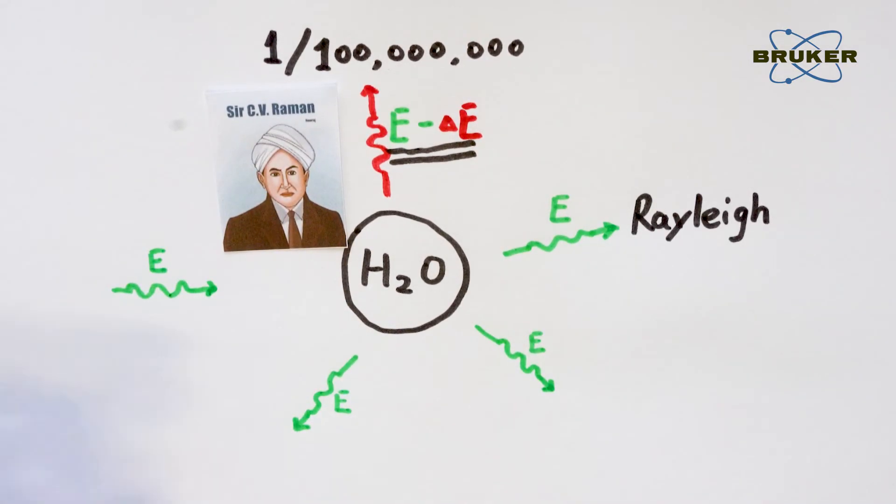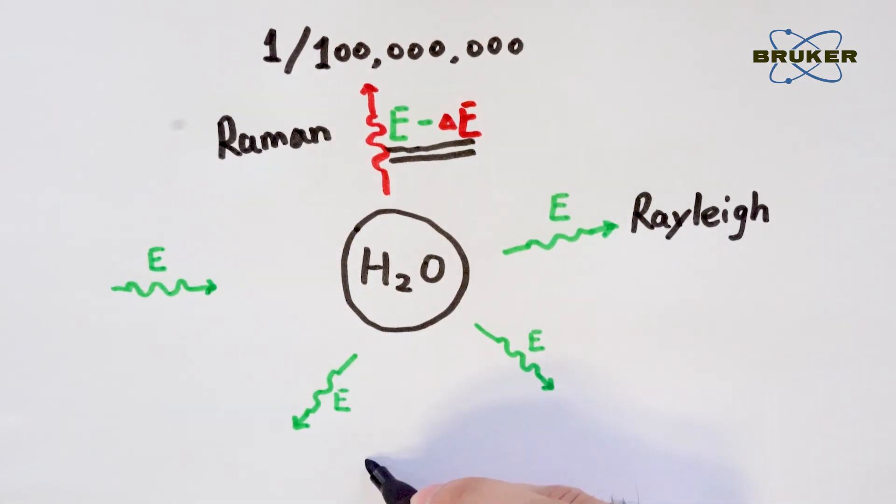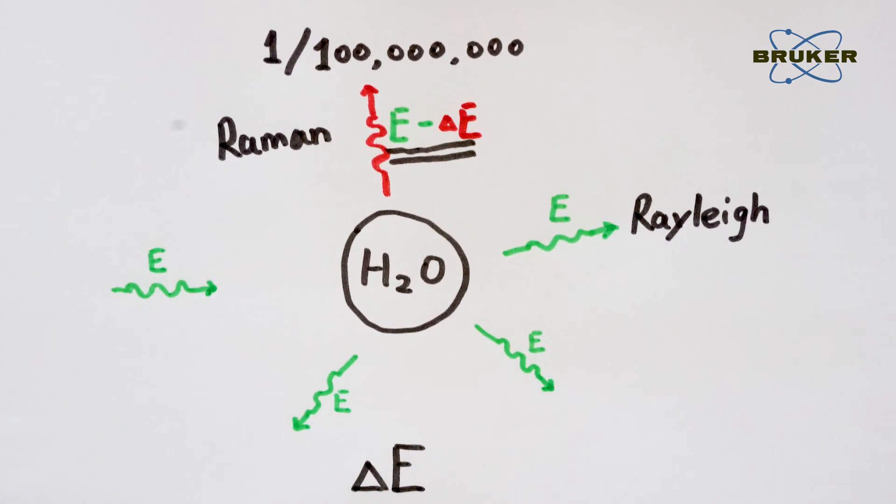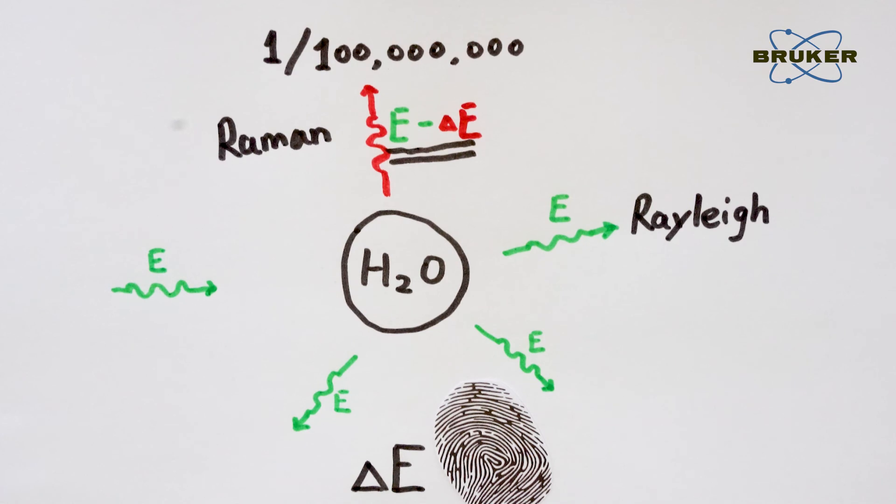If inelastic scattering happens, the scattered photon carries a different amount of energy. This difference is called Raman shift and it's like a fingerprint of the matter.